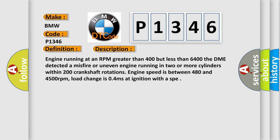Engine running at an RPM greater than 400 but less than 6400. The DME detected a misfire or uneven engine running in two or more cylinders within 200 crankshaft rotations. Engine speed is between 480 and 4500 revolutions per minute.